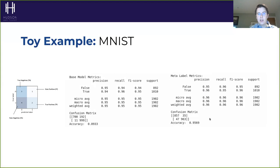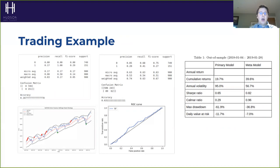Meta labeling is adding value and working as expected. Many people have asked whether this is like a boosting algorithm — an ensemble where you train additional models to get a better fit. This is actually quite different: it's a secondary model whose only job is identifying the false positives. The mechanics behind it are quite different from boosting.